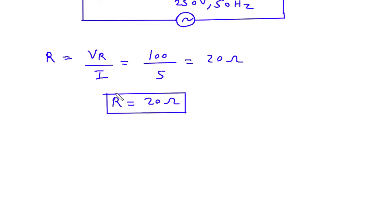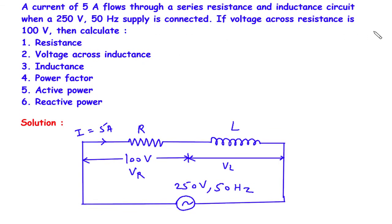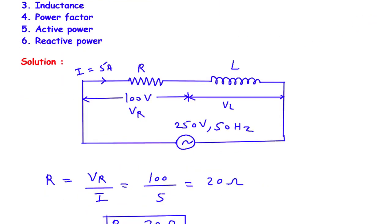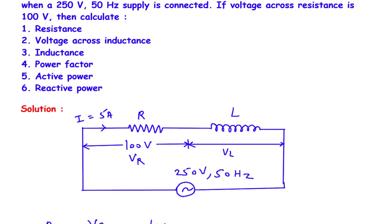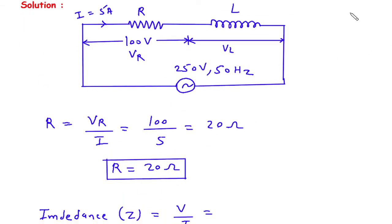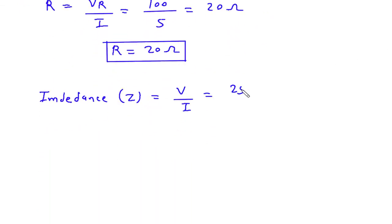Next we have to find the voltage across inductance. To do that, first of all we have to find impedance. Impedance Z is equal to V divided by I. The value of voltage is 250V and the value of current is 5A. So 250 divided by 5 is 50. Therefore impedance Z is equal to 50 Ohm.